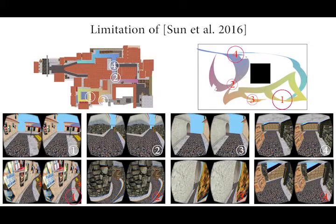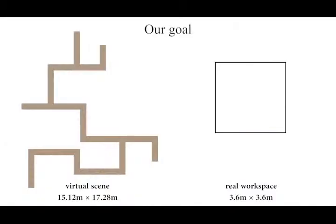However, for large-scale scenes, the method may produce maps with substantially large distortions and result in unacceptable visual artifacts. We propose a divide-and-conquer method to map arbitrarily large virtual scenes into a given real workspace.